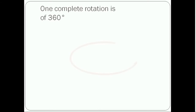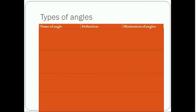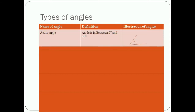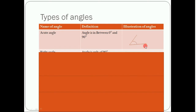Now I will tell you about the types of angle. You can see here: name of angle, definition, and how we illustrate each type. The first one is acute angle. Acute angle is between 0 and 90 degrees. You can see an acute angle is less than 90 degrees and it starts from 0 onwards — its shape is like this.